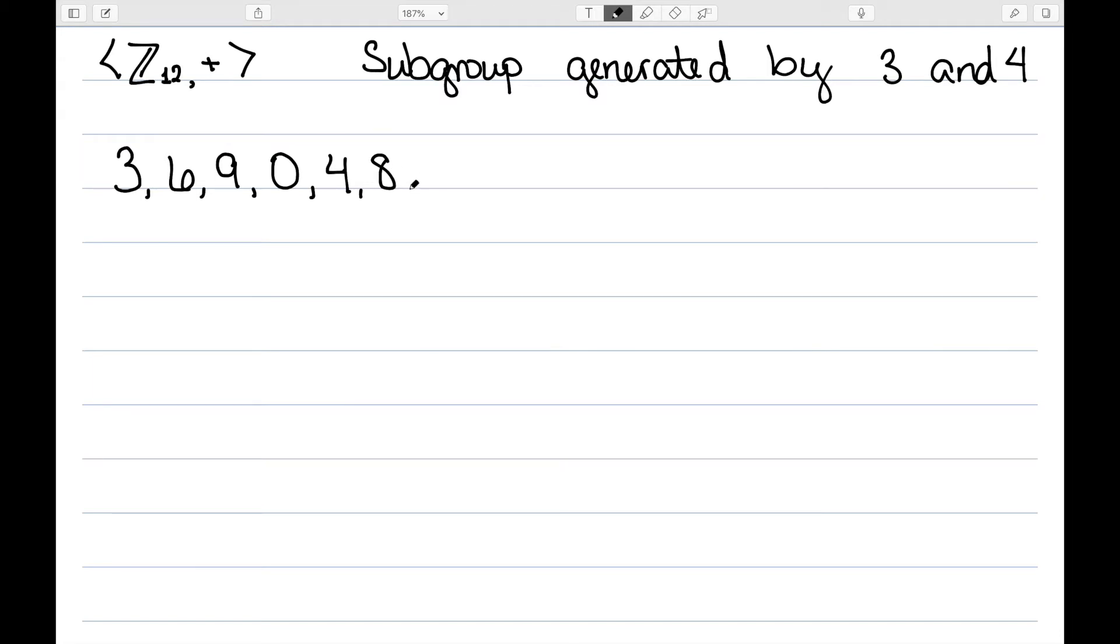And now we need to look at all combinations of these. Let's see. 3 plus 6 was 9. 3 plus 9 is 12, which is 0. 3 plus 4 is 7.